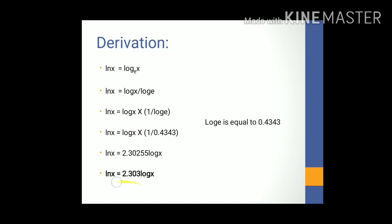So ln of x is equal to 2.303 log of x. You can convert ln function into log function in this way.